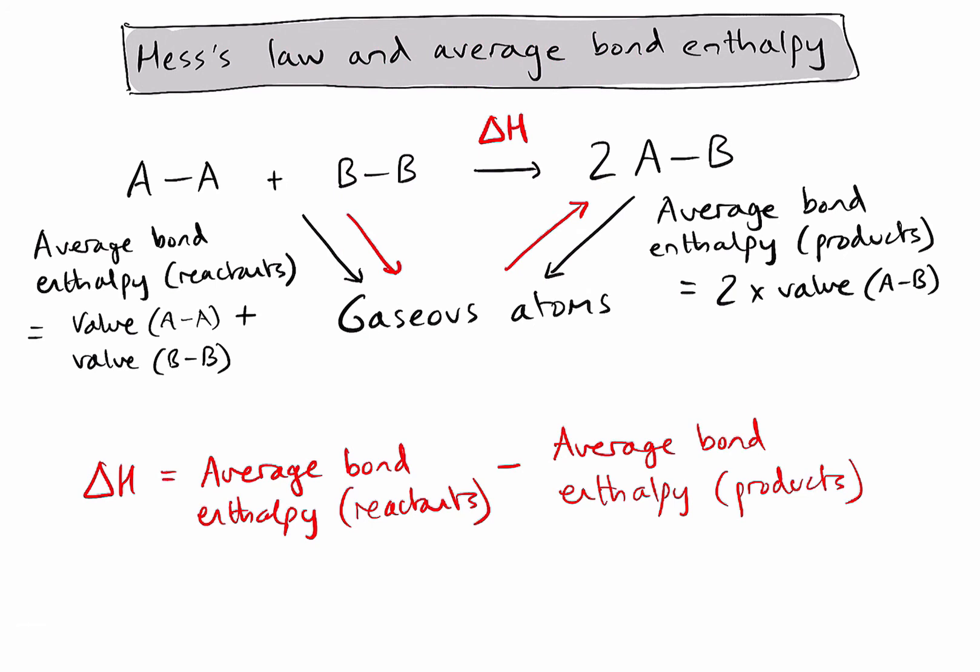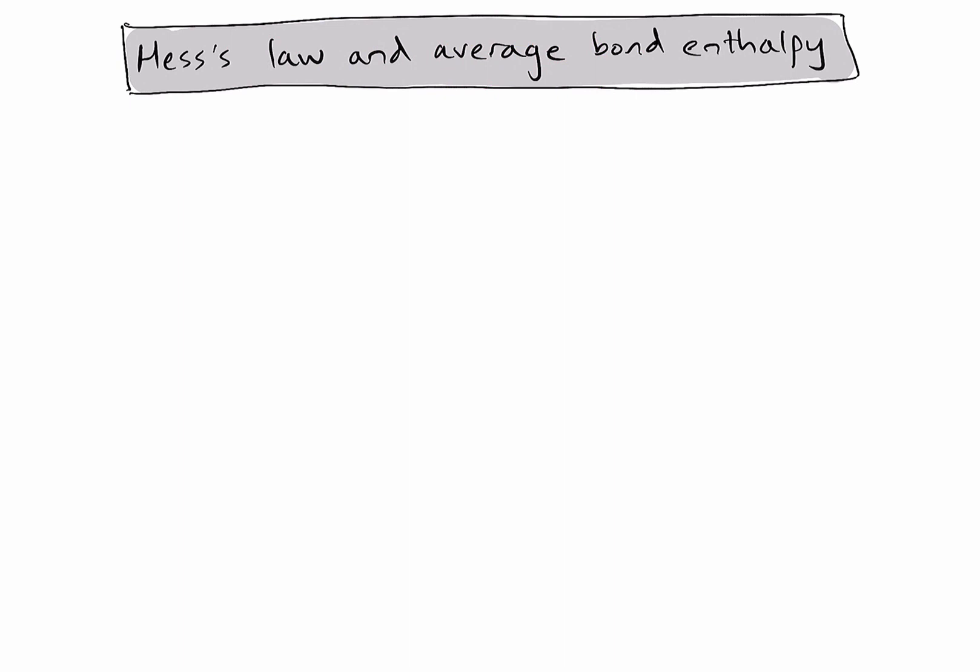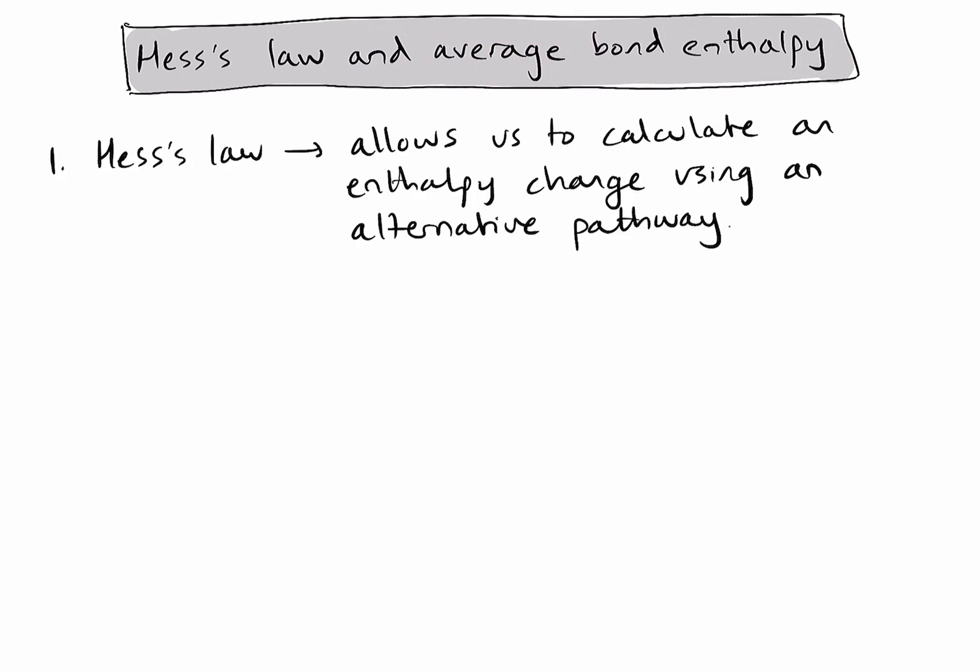Let's now consider the key points from this video. Firstly, Hess's law allows me to take an alternative pathway to calculate the enthalpy change of a reaction. In this case, we find an alternative pathway by calculating the total average bond enthalpy of my reactants and the total average bond enthalpy of my products.